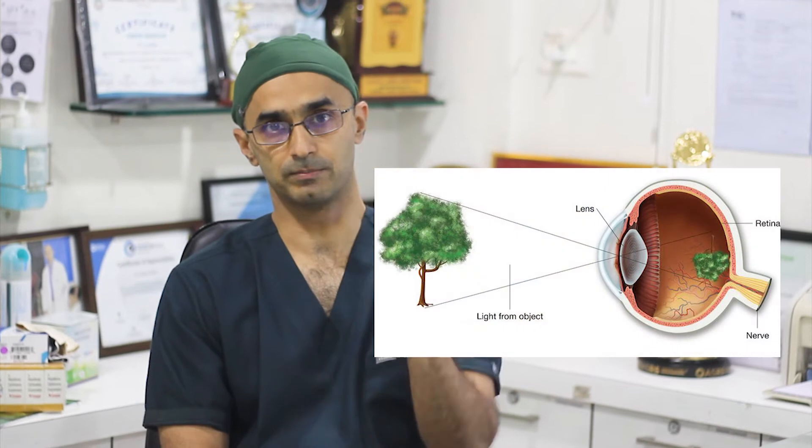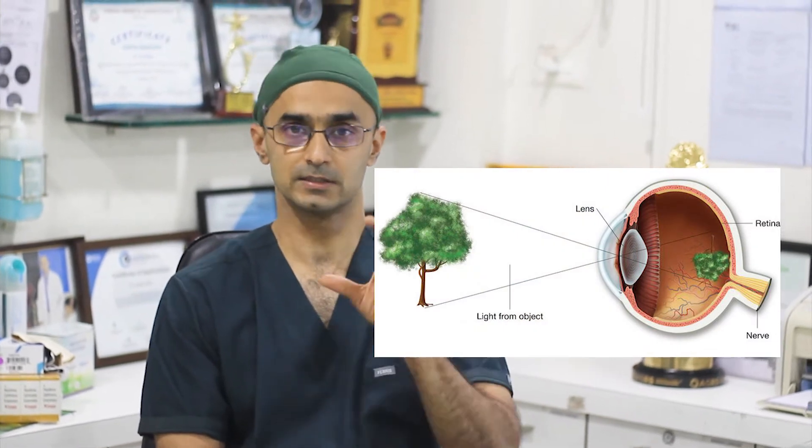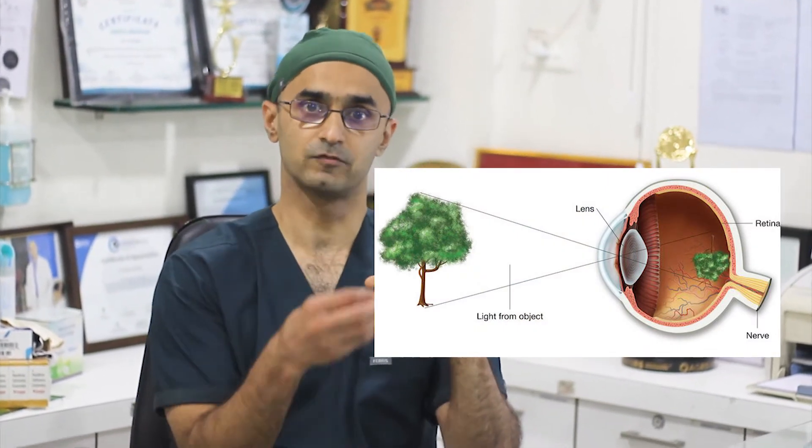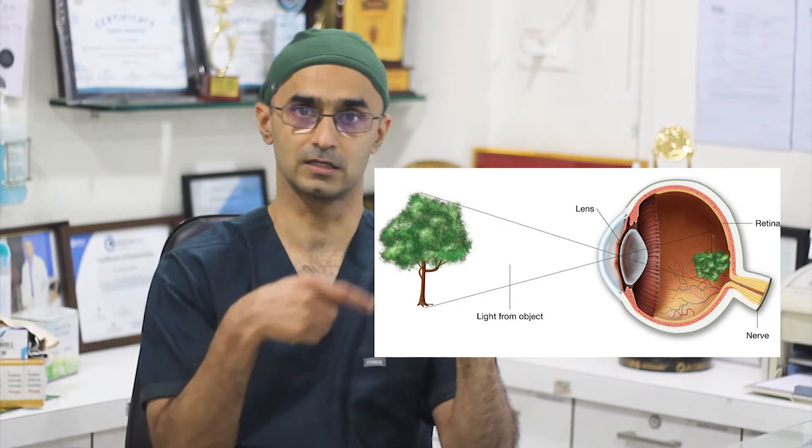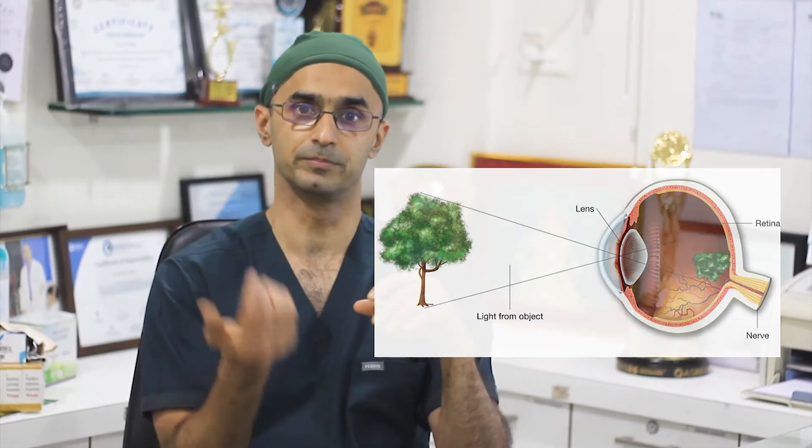The retina is the most important part of the eye, situated at the back of the eye where the image is formed and then transferred via the optic nerve to the brain. Due to age, diabetes, or certain conditions affecting retinal blood circulation — called vascular occlusion — it can affect the central part of the retina, leading to loss of focusing power or loss of central vision.